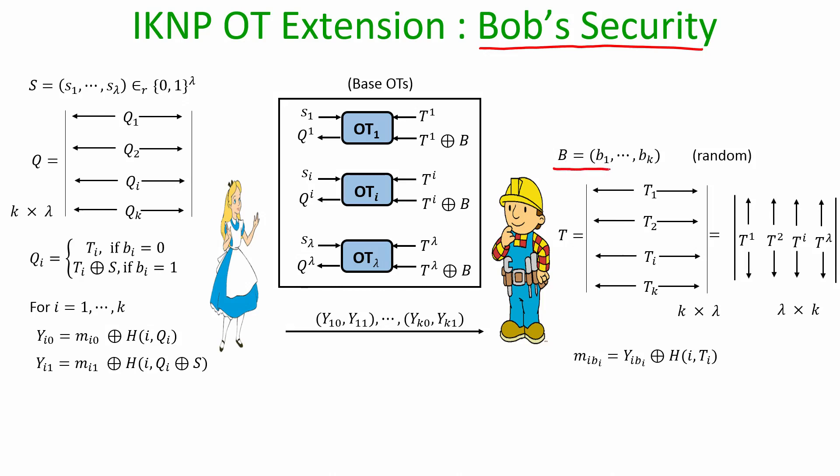For Bob's security, we have to argue that nothing about his choice vector big B is learnt by a corrupt Alice. We have to argue whether she learns anything about this choice vector. So what exactly she learns through interaction about the choice vector of Bob? Well, the choice vector of Bob is involved only in these base OTs. But they are not directly used as inputs by Bob. He is masking those inputs with random columns of the T matrix and each instance, even though it is the same B which is involved, it is XORed with independent pads because in each instance an independent column of the full matrix T is used.